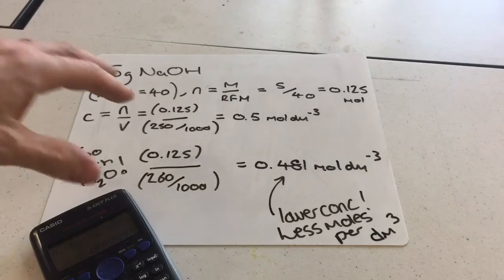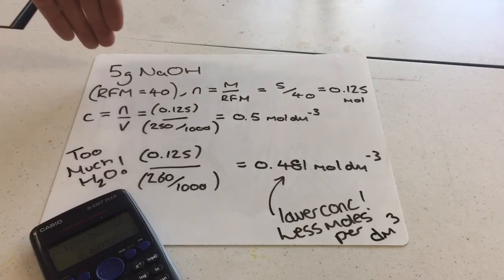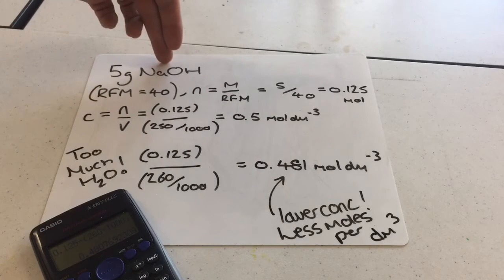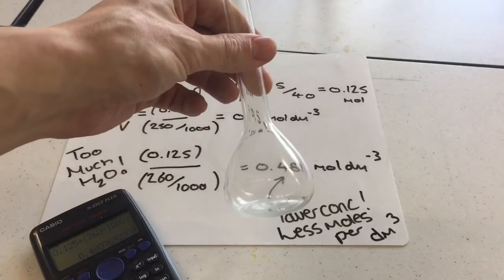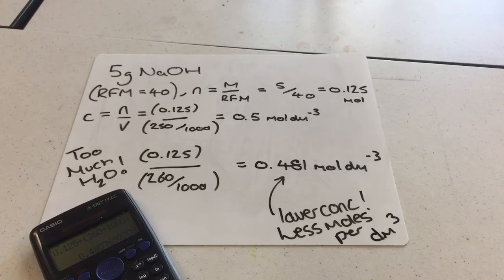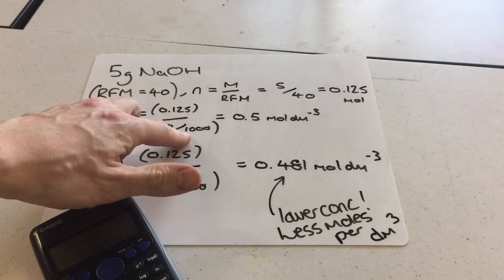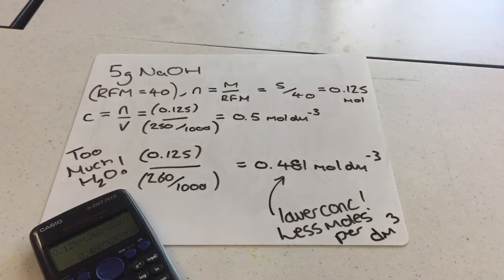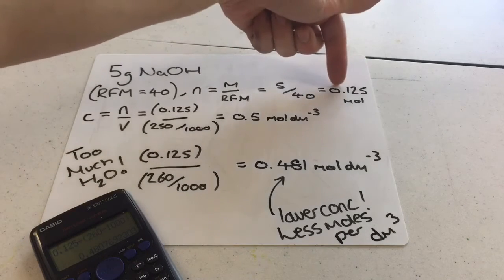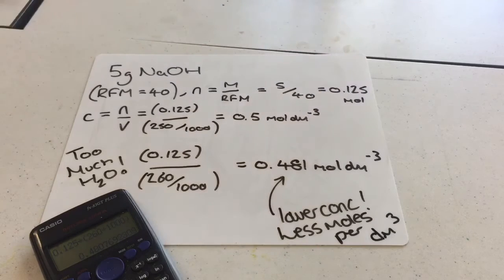If we look at an example calculation: if you add 5g of NaOH to a volumetric flask and make a 250cm³ solution, you end up with a 0.5 mol dm⁻³ solution, because you're adding 0.125 mol into a volume of 250cm³.